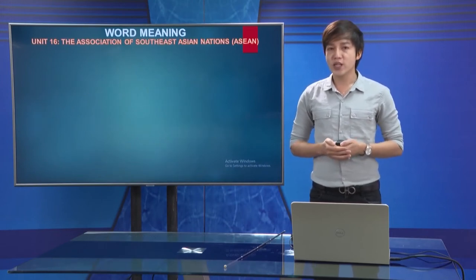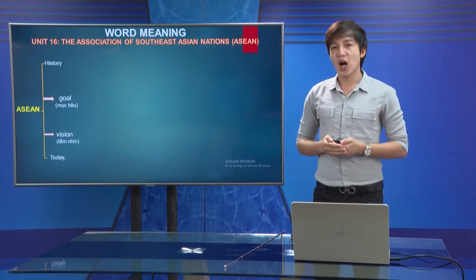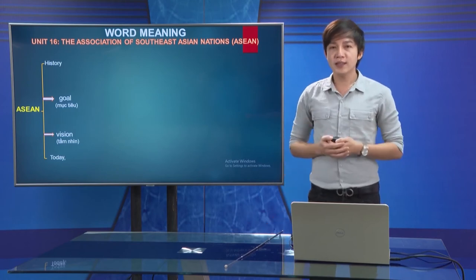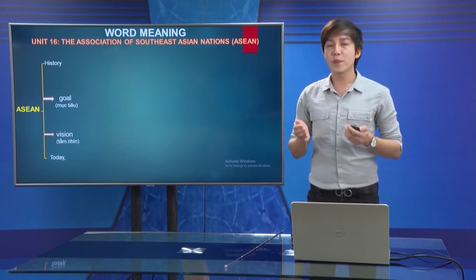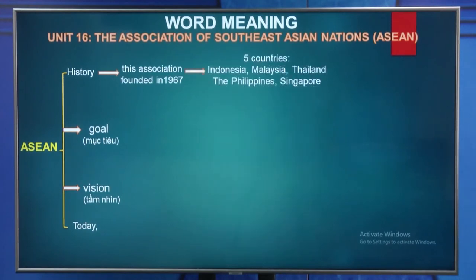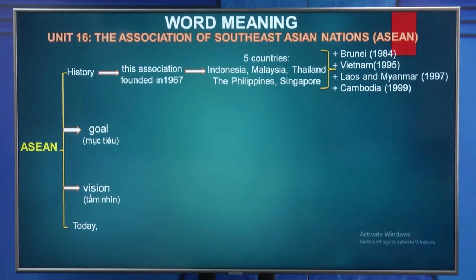Now let's move to Unit 16 - The Association of South East Asian Nations, or ASEAN. This association was founded in 1967 with five founding countries: Indonesia, Malaysia, Thailand, the Philippines, and Singapore. More countries joined later: Brunei in 1984, Vietnam in 1995, Laos and Myanmar in 1997, and Cambodia in 1999.